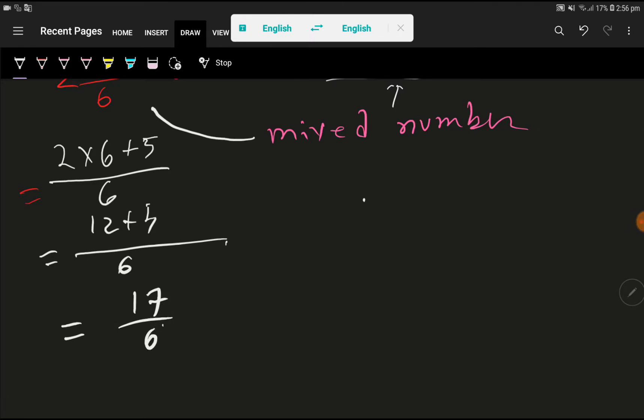Look, 17 divided by 6. Here numerator is 17 and denominator is 6, so numerator is greater than denominator. So this is the answer, and this is the improper fraction. So thank you for viewing this video.